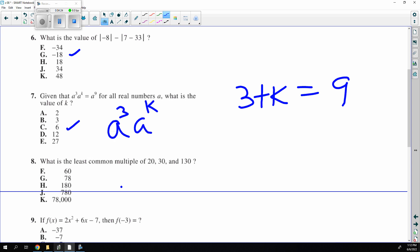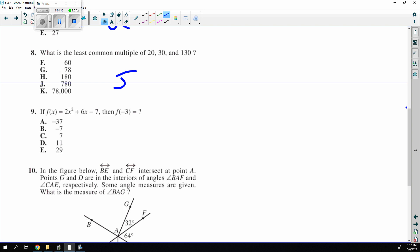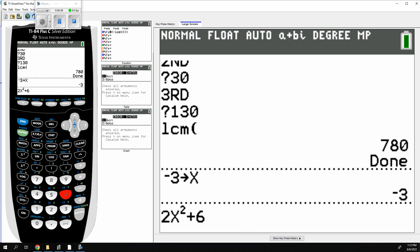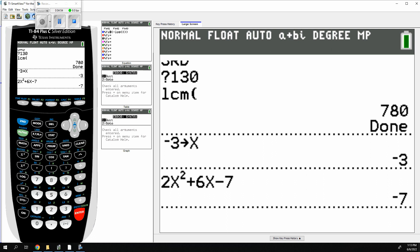And another stow. Negative 3 has to be plugged in. So we're going to go negative 3 stow X. And of course, that means the calculator thinks that we're negative 3. 2X squared plus, oh I hit minus, plus 6X minus 7. And I get minus 7 for my answer, B.